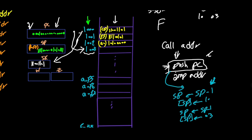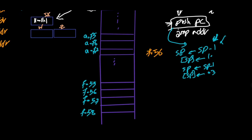Right now SP is pointing to F057h. F057 is decremented to F056h; this address is selected and the higher byte 10h (or 00010000 in binary) is placed there. Then SP is decremented again to F055h, and the lower byte 03h (00000011 in binary) is pushed there, giving us 03h at F055h.